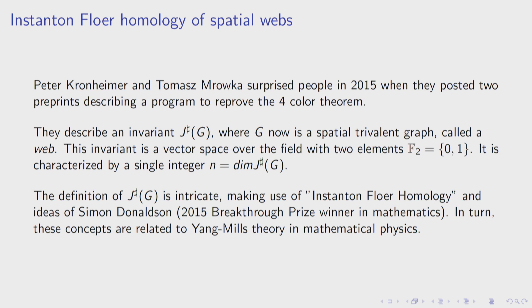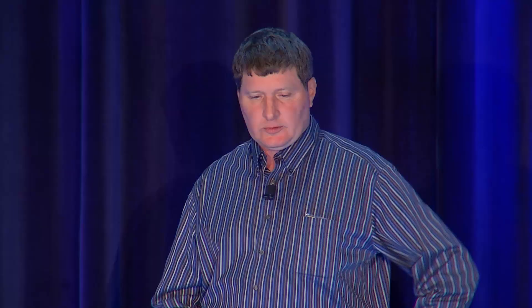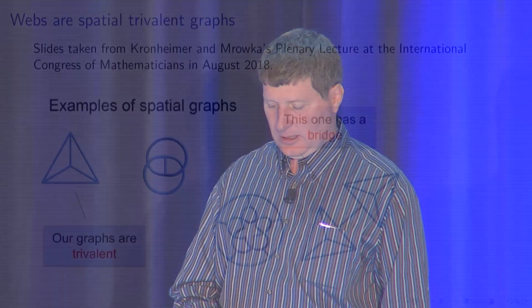This invariant is a vector space over the field with two elements — zero and one — but it's just characterized by a number: the dimension N, which characterizes it. The definition made use of what's called instanton Floer homology, some ideas of Simon Donaldson — the 2015 Breakthrough Prize winner in mathematics — and his work made use of Yang-Mills theory, a theory in mathematical physics. I've taken a few slides from their ICM talk; if you want to learn more I'd suggest looking at their talks from the International Congress of Mathematicians.